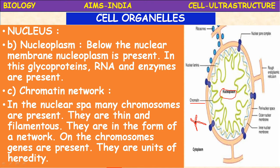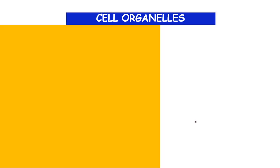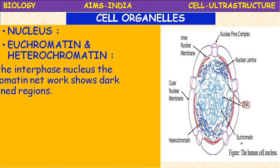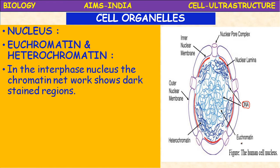The chromatin material is very important. It is divided into heterochromatin and euchromatin. The DNA is the actual vehicle of heredity, present in the genes. During interphase — the phase between two cell divisions — the chromatin material exists in two distinct states: euchromatin and heterochromatin.